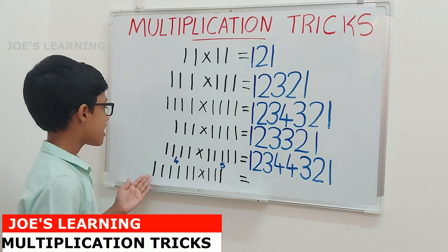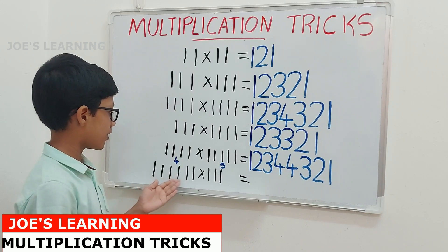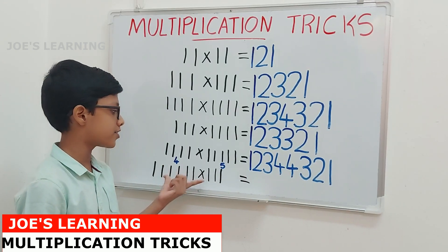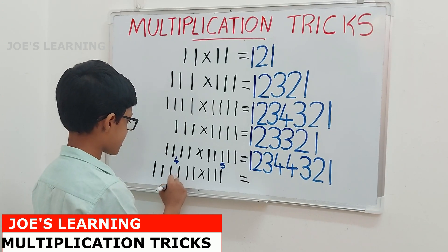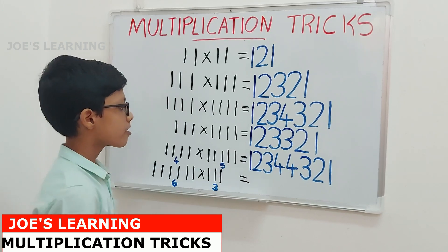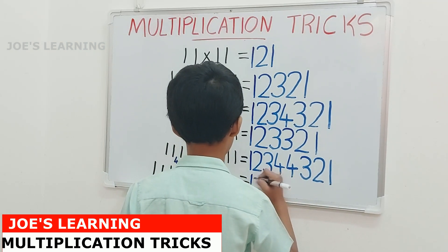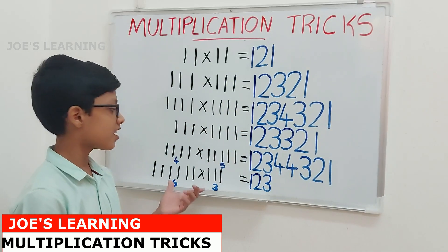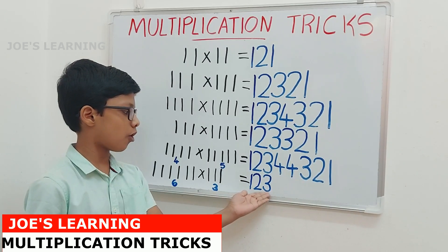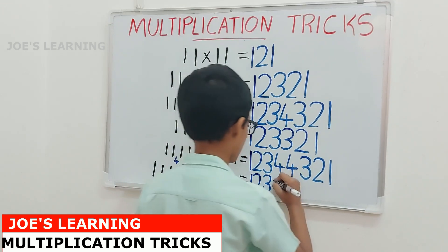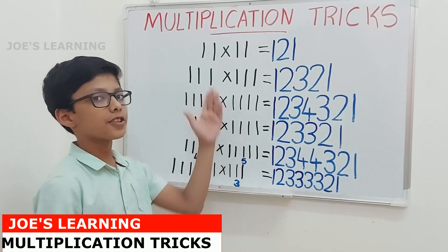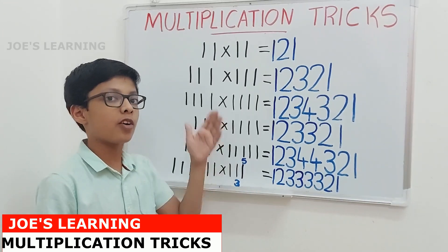Now let us look at 111111 multiplied by 111. First we find the number of digits — this number has 6 digits, while this number has only 3. So the smallest number of digits is 3, and we keep increasing until we reach 3. Then we find the difference: 6 minus 3 equals 3, so we write the last digit 3 more times. Then we keep decreasing until we reach 1. Using these multiplication tricks, we can find the product of these types of numbers.